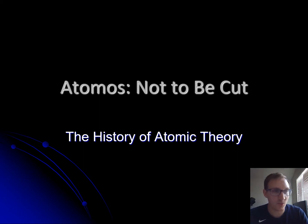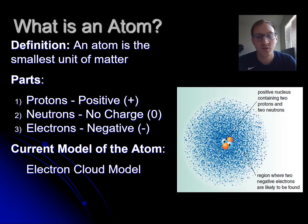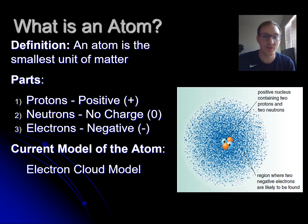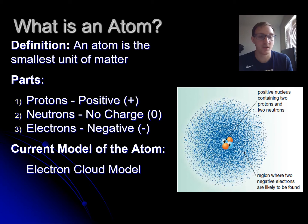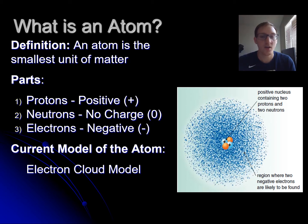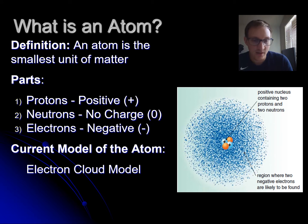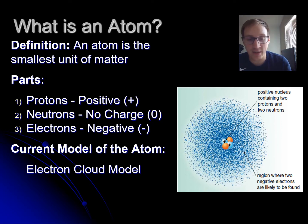Today we're talking about the history of atomic theory. Let's start by reviewing what the atom is. An atom is the smallest unit of matter. In more advanced chemistry they'll say there's something even smaller, but for our purposes view it as the smallest unit of matter. An atom is made up of protons, which have a positive charge, and neutrons, which have no charge — both located in the nucleus. Electrons are the negative charges and they float around the nucleus. The current model is called the electron cloud model.